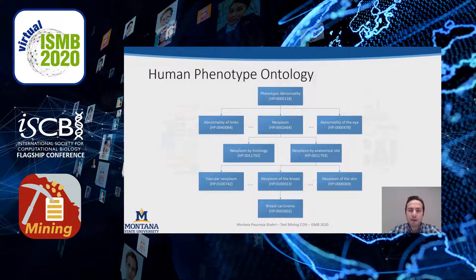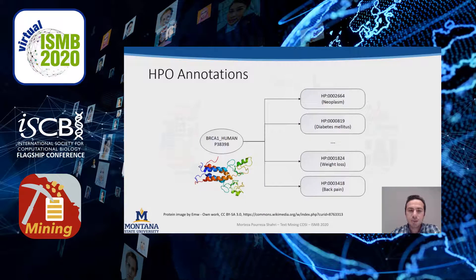For example, neoplasm is a phenotypic abnormality, and breast carcinoma is a neoplasm of the breast. The HPO website provides HPO annotations for human proteins — for each protein, we have a list of HPO terms associated with it. For example, BRCA1 is annotated with neoplasm, weight loss, and back pain in the HPO database.